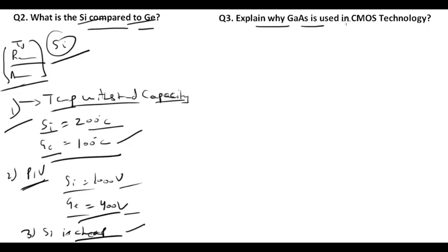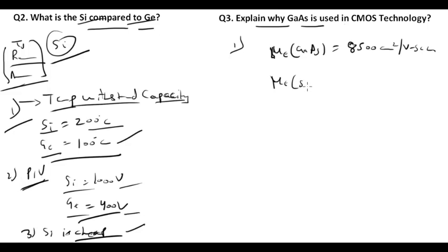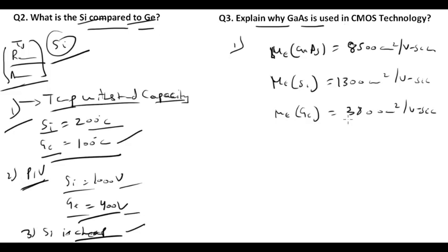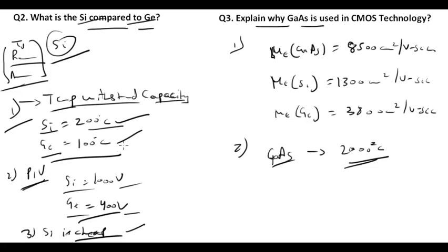Question number three: explain why gallium arsenide is used in the CMOS industry. The mobility of electrons for gallium arsenide is around 8500 cm²/V·s, whereas for silicon it is 1300 cm²/V·s, and for germanium it is 3800 cm²/V·s. Additionally, gallium arsenide can withstand temperatures up to 2000°C, compared to 200°C for silicon and 100°C for germanium.